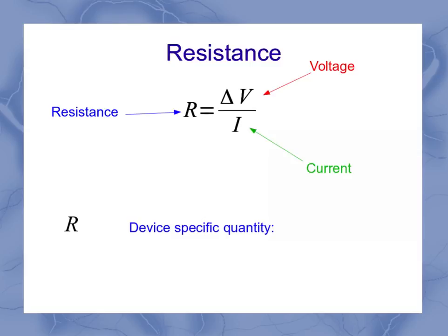So capital R is a device-specific quantity if it's an ohmic resistance. And if it does follow Ohm's law, then I've got a material-dependent constant and some geometry that are going to come into that. And we're going to cover that equation in a bit more detail.